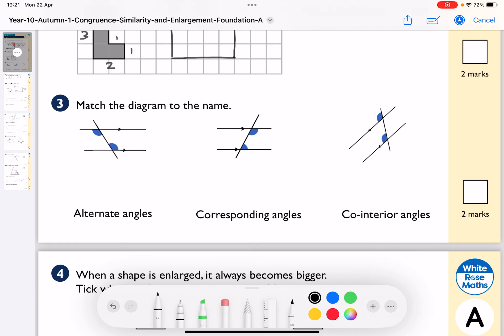Right, match the diagram to the name. This one here at the top, when we have this line going through, which is called the transversal, when the angles are basically the same and they're either side of the line, that is alternate. So that one there are alternate angles.